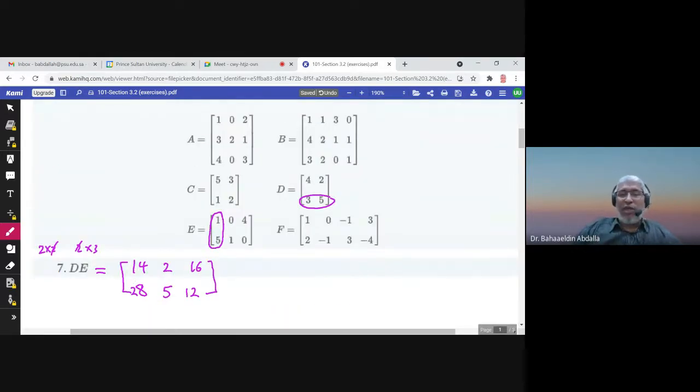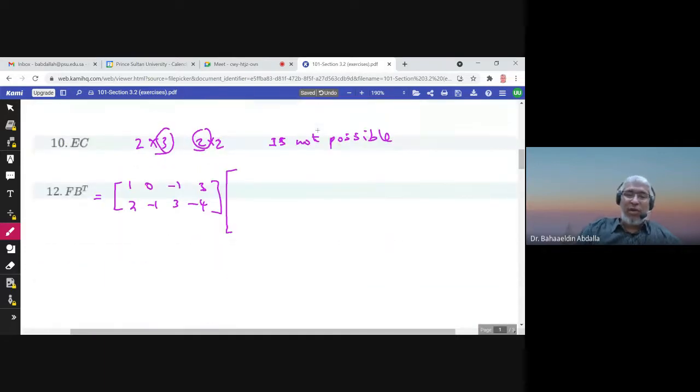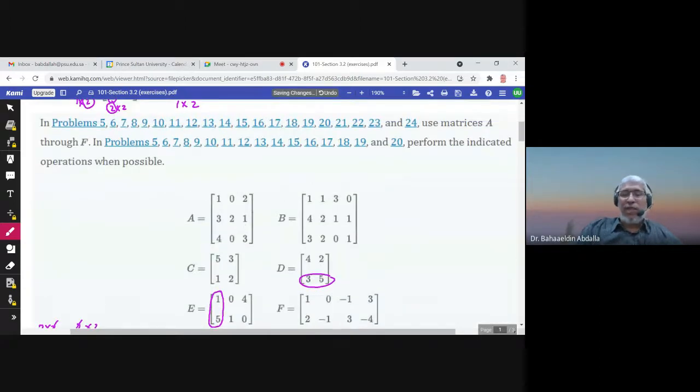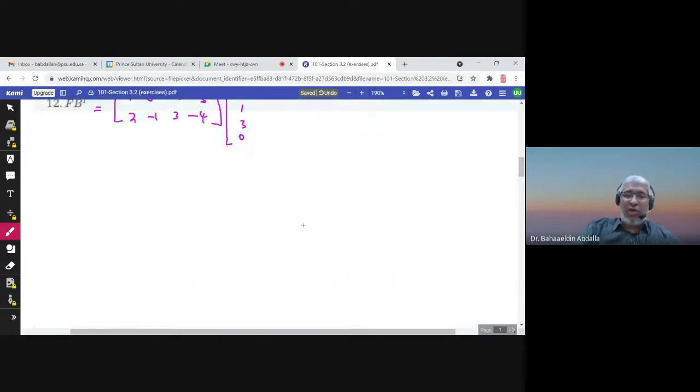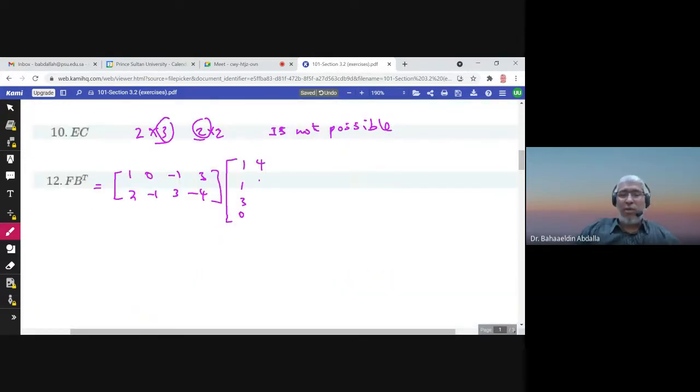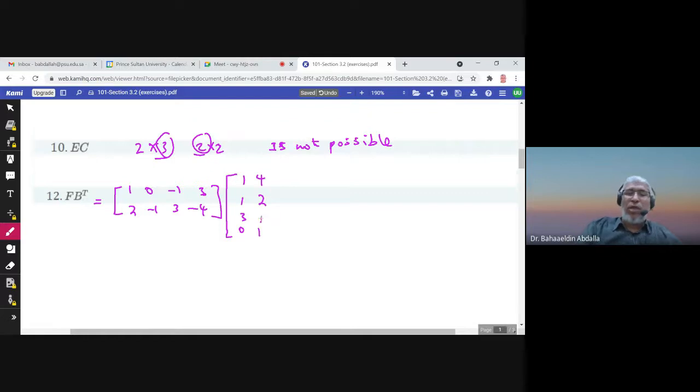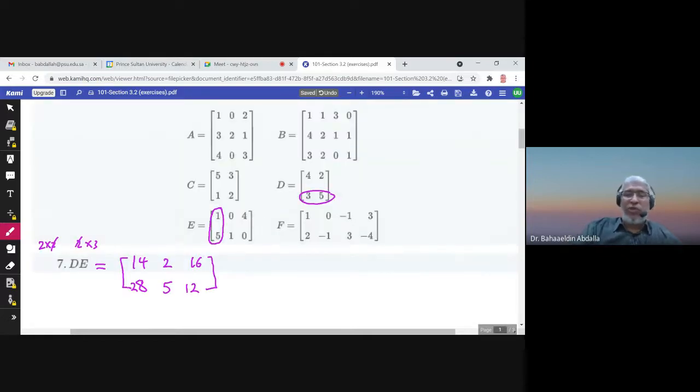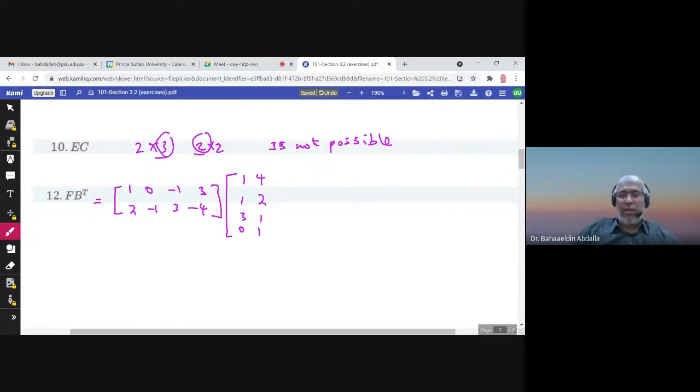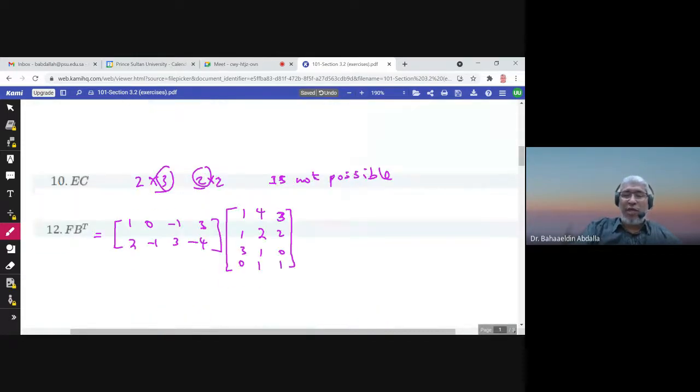How to find B transpose? Remember, the first row we write at the first column: 1, 1, 3, 0. The second row, 4, 2, 1, 1, we write at the second column. And the last row, 3, 2, 0, 1, would be the third column in B transpose.